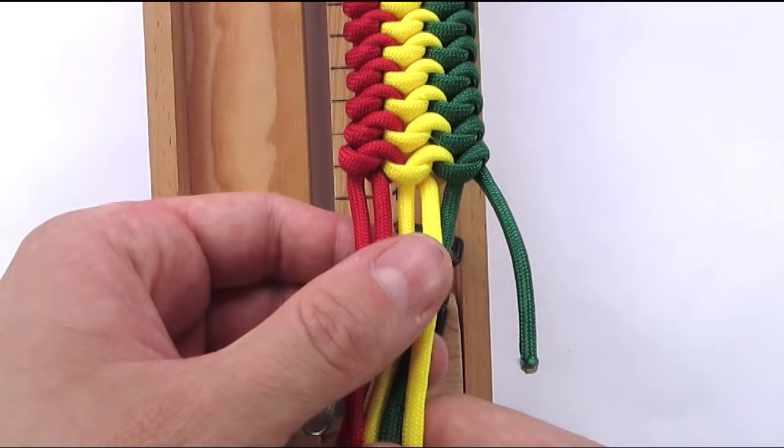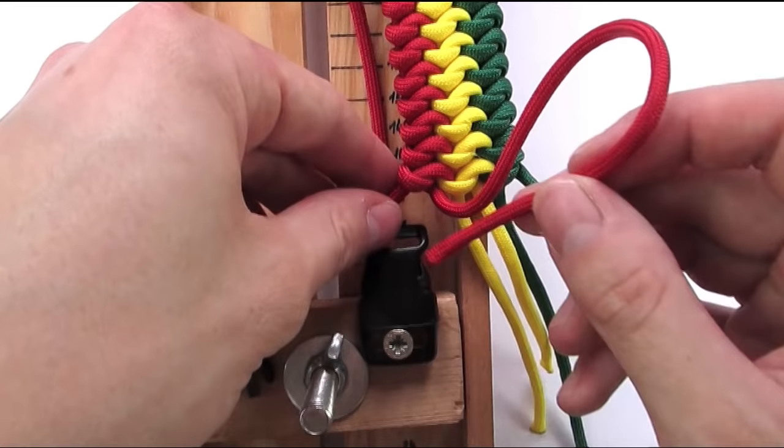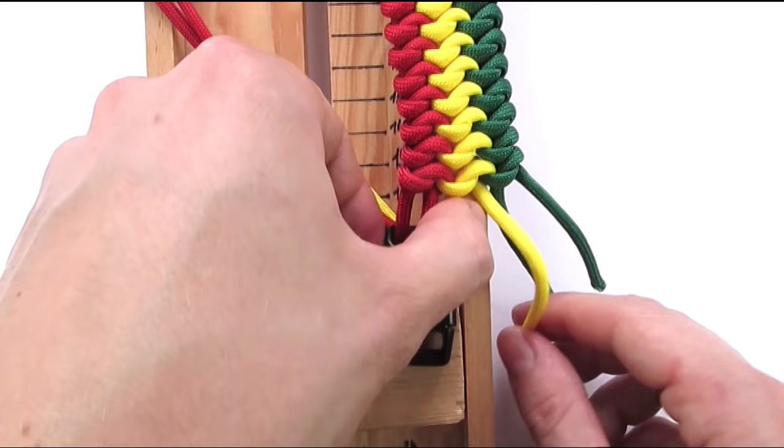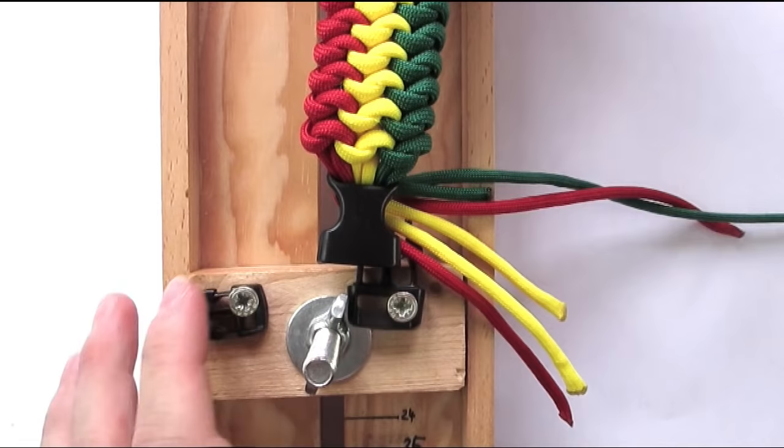Once you have reached the sufficient length for your bracelet, it is time to finish it. The first thing we're going to do is tuck our ends through the other end of the buckle. Now the last cords will be a bit of a tight fit, so I'm going to do it off camera. And once you complete your tucking, you have your cords sticking out on the bottom.